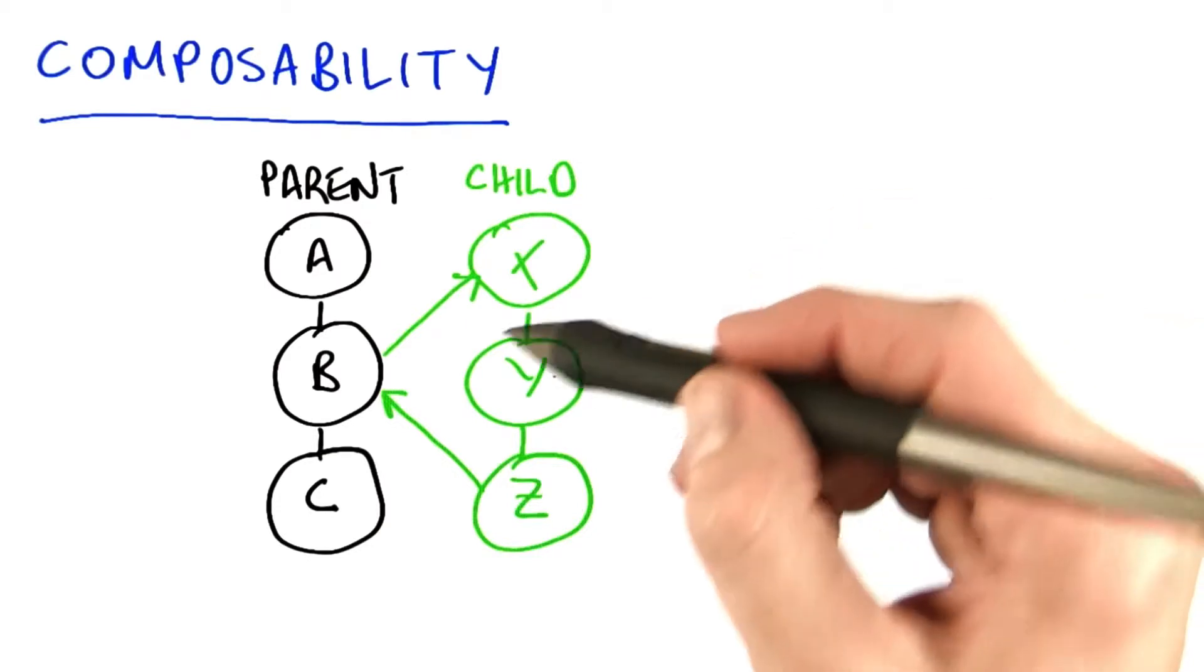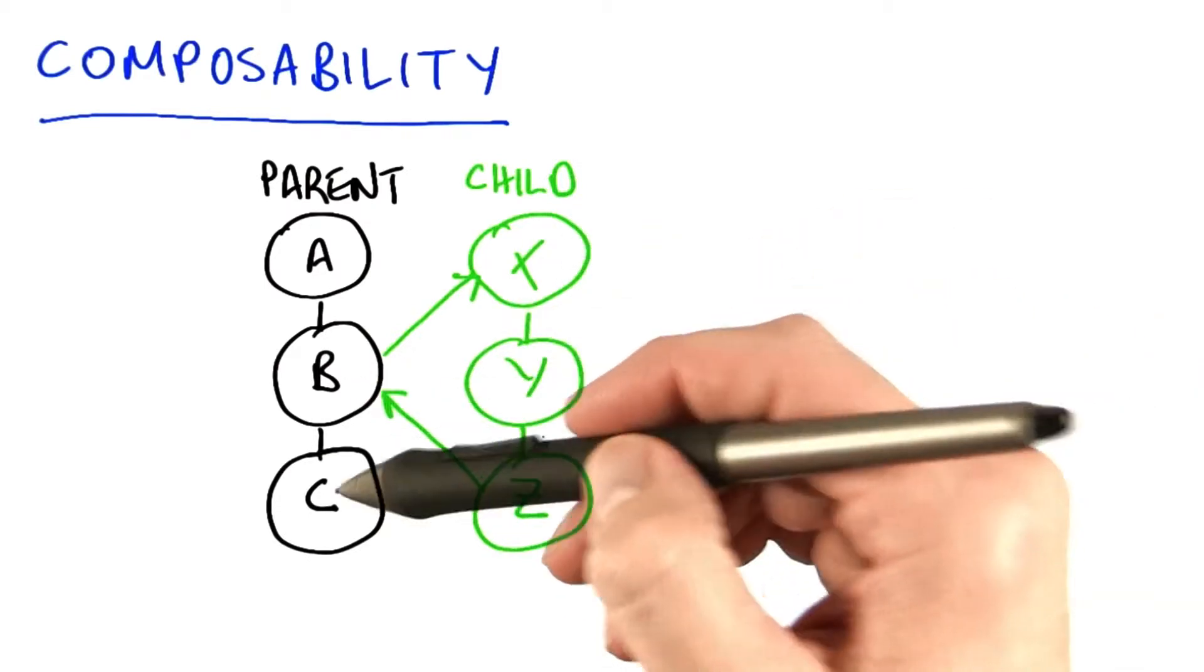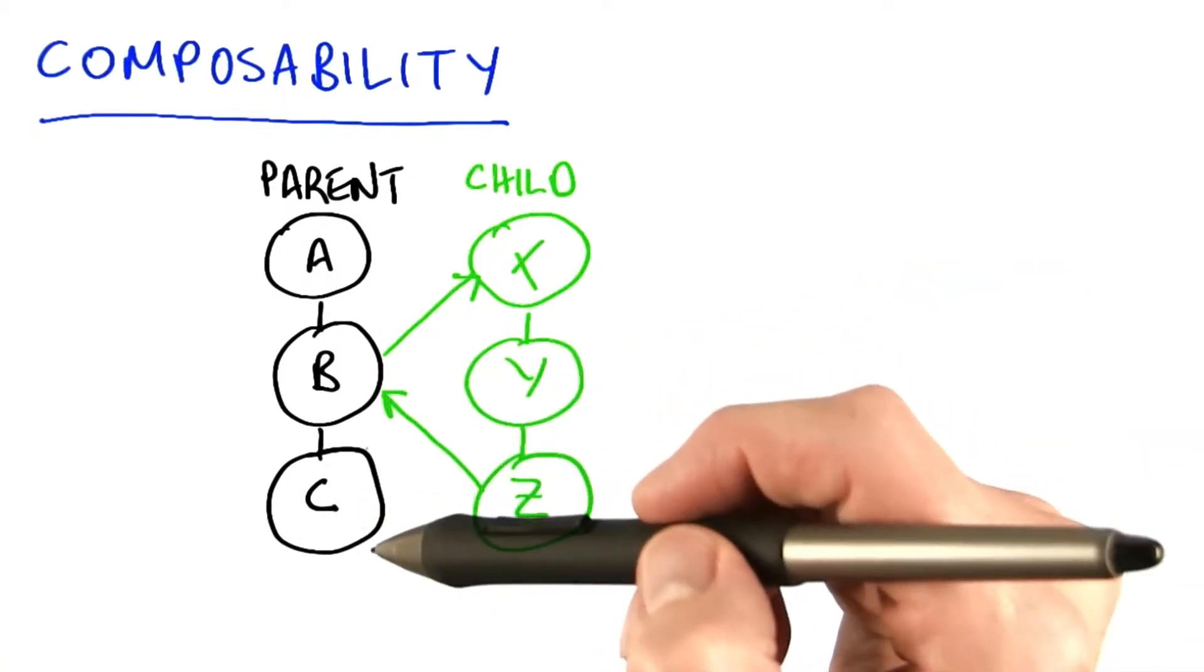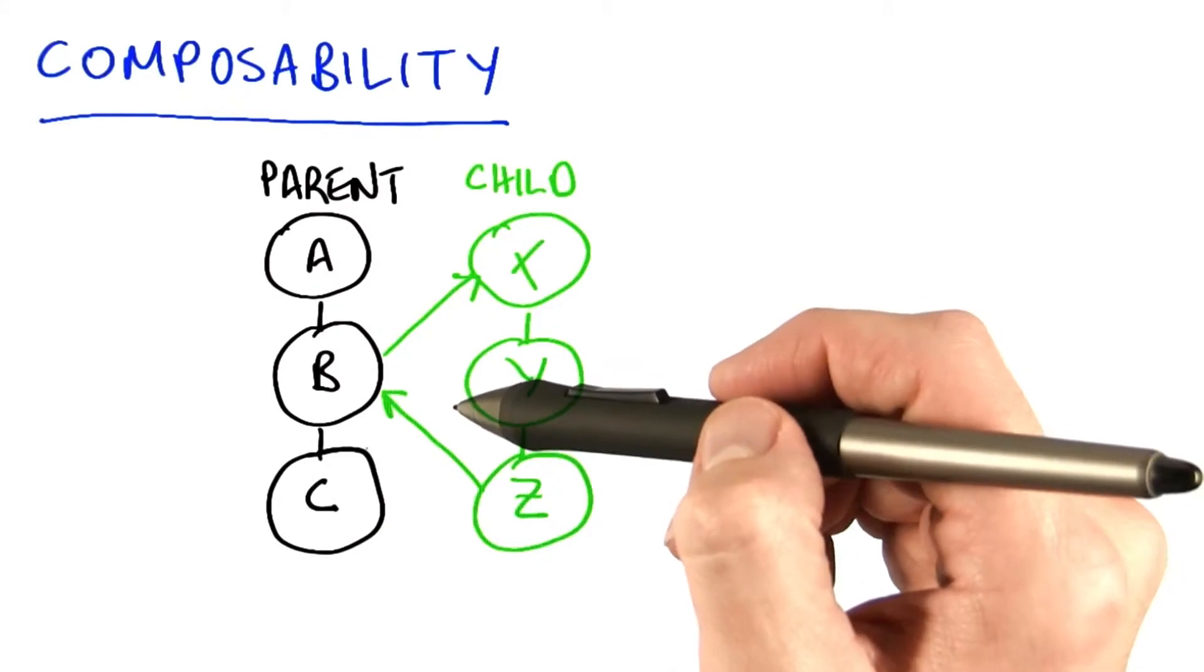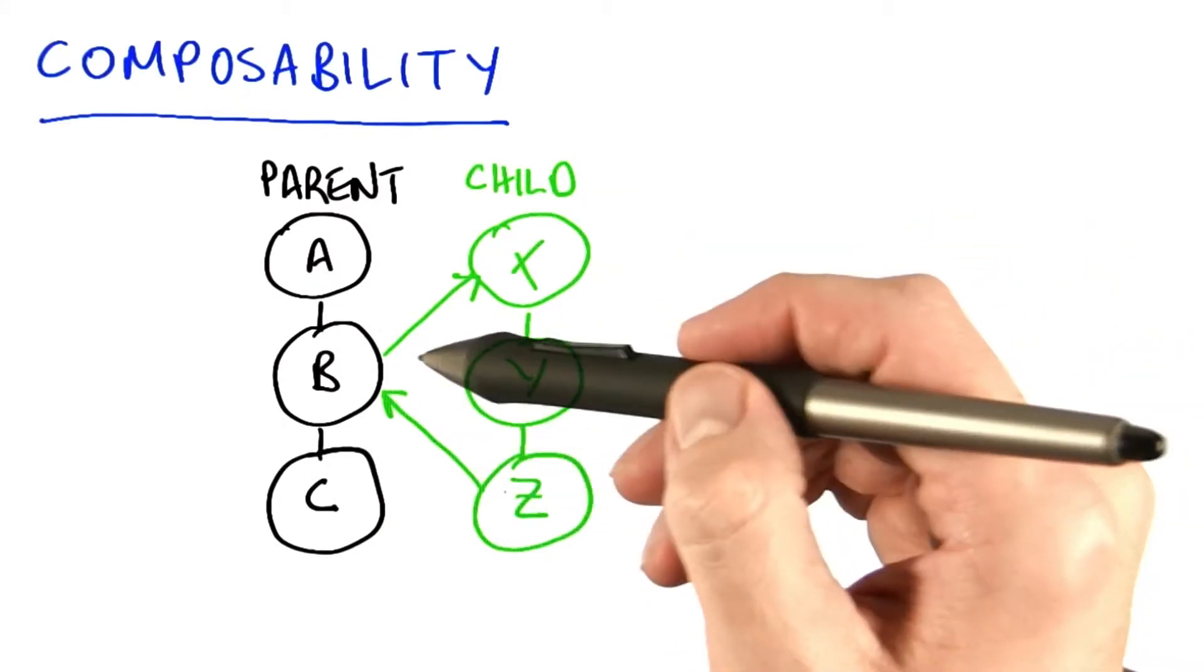Now composability says that whatever B does is entirely private to B. That means C has no idea and quite honestly doesn't care what B is doing. B is not considered to have finished until all of its other children, x, y, and z in this case, have also finished.